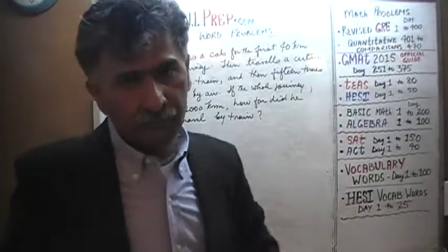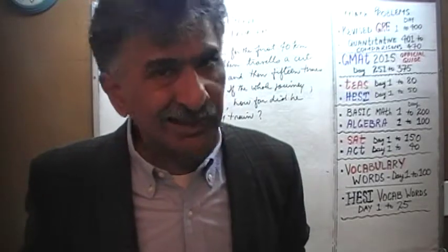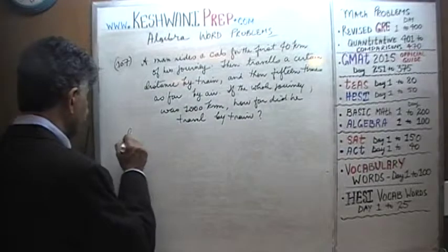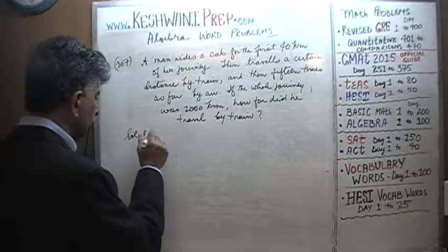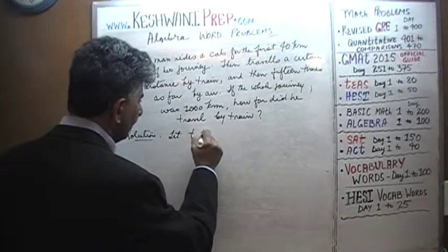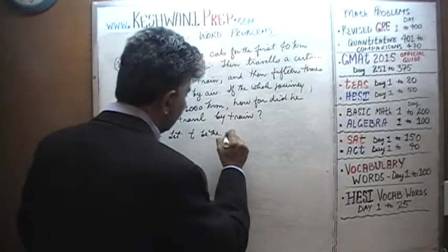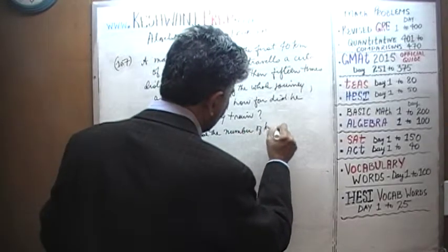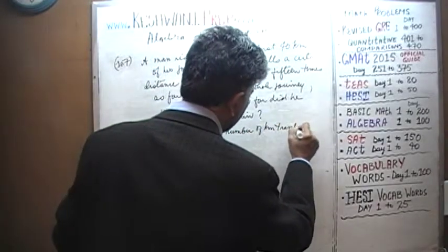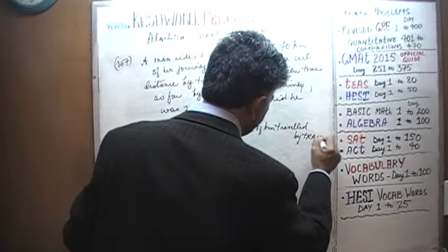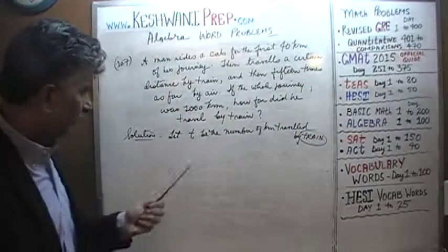So what is our unknown here? The unknown is how far did he travel by train. Let's give this unknown quantity a name. Let T be the number of kilometers traveled by train — T for train. That's our unknown.